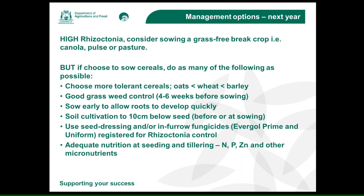You also have two options to consider: seed treatments and in-furrow fungicides. The in-furrow fungicides are Evergold Prime and Uniform, which are registered for Rhizoctonia control. For seed dressings, there are a number of different options — at the end of this presentation there's a link to seed dressings and in-furrow options so you can see what's available for Rhizoctonia as well as other root diseases. Finally, make sure you put down adequate nutrition for the seedlings and developing plants at the time of tillering — that's your nitrogen, phosphorus, as well as some minor micronutrients. Healthy plants tend to outgrow diseases much better, which is why good nutrition matters.